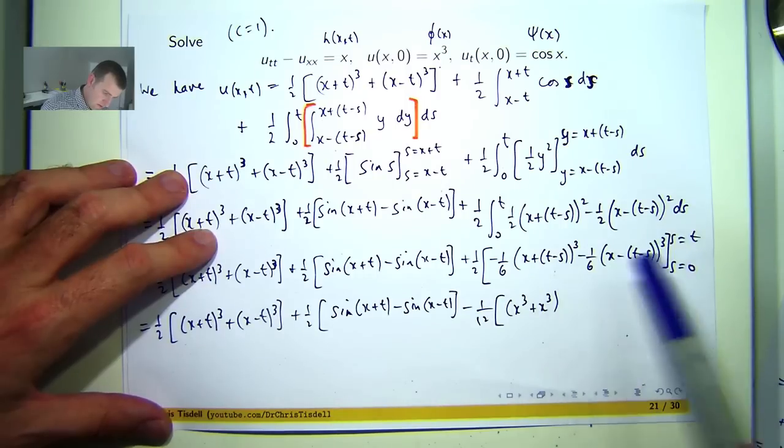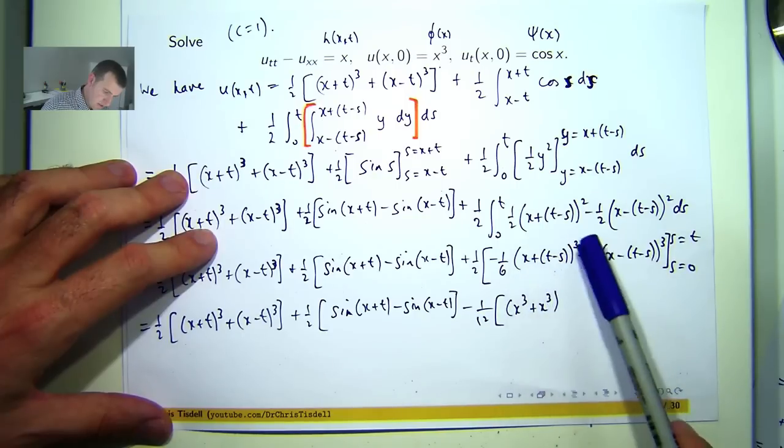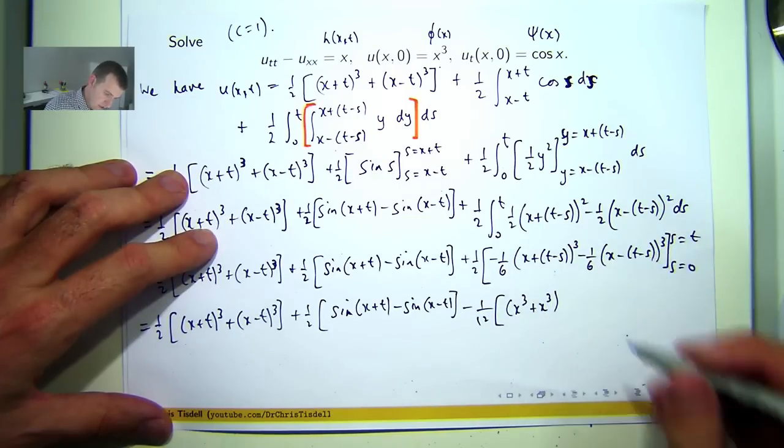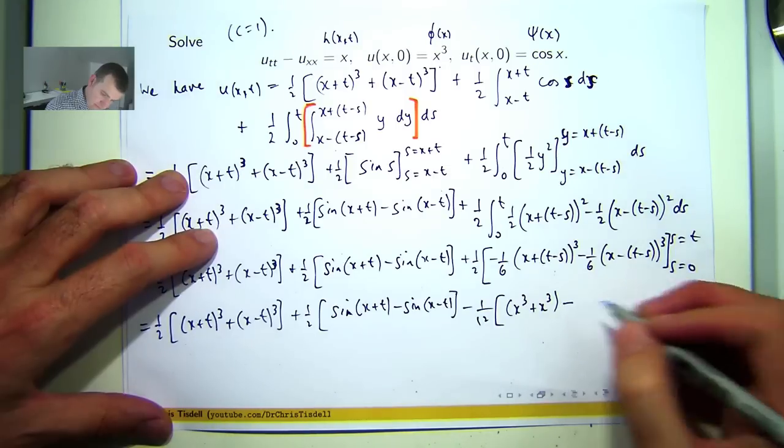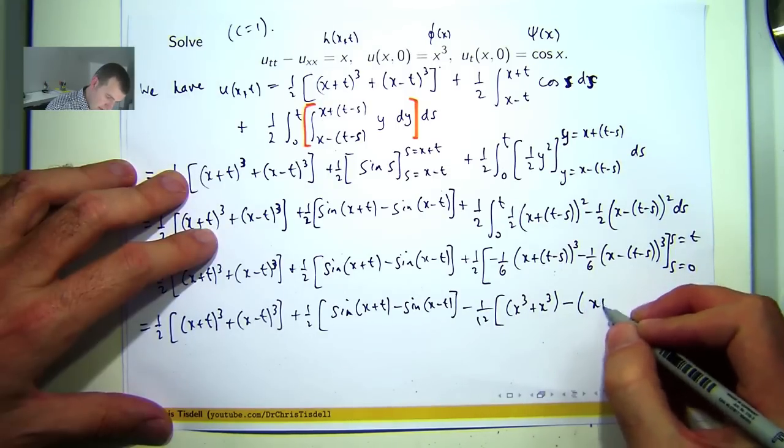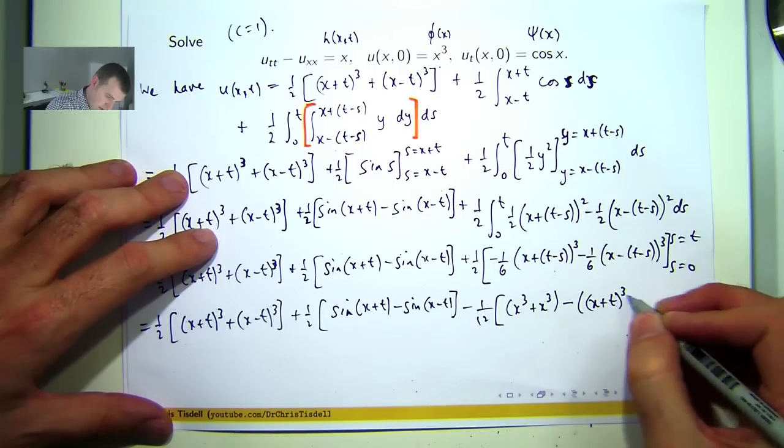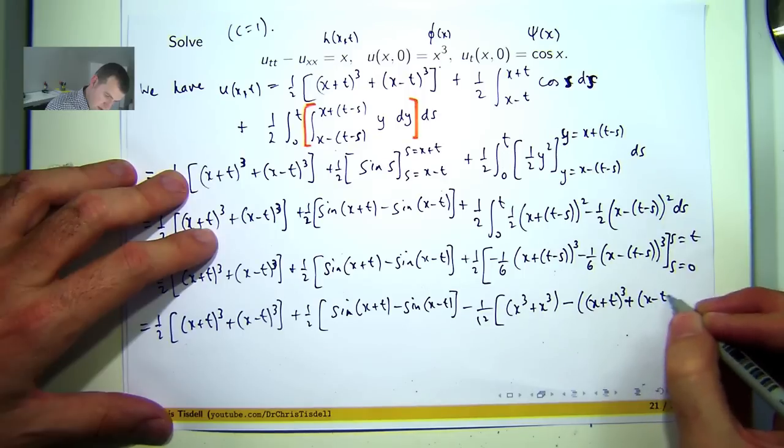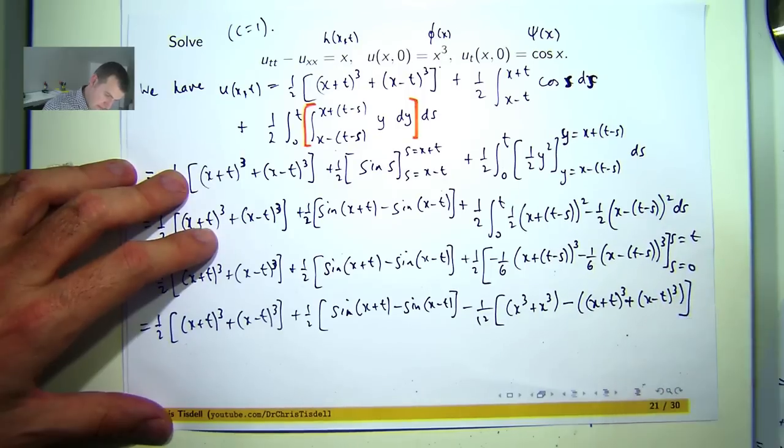And when s equals 0, well, that'll disappear, and that'll disappear. So I'll get x plus t all cubed, and x minus t all cubed. Okay?